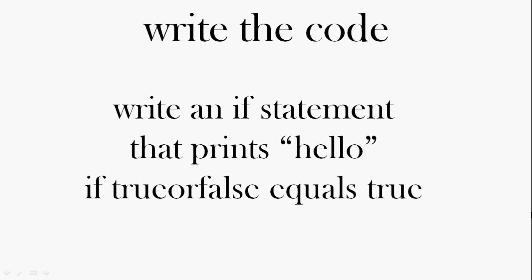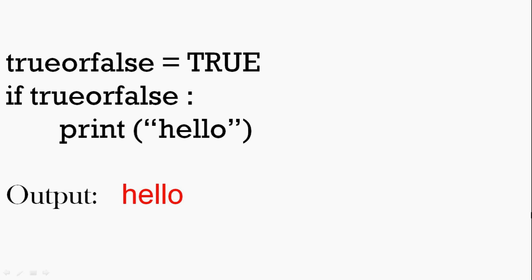Now write the code. Write the if statement that prints hello when true or false is true. So that's straightforward, just a question if you could remember how to do it. So true or false equals true. If true or false, the colon, print statement, and that will print hello. Maybe you can try that, and if you make mistakes, then error messages help to see if there's any problems.